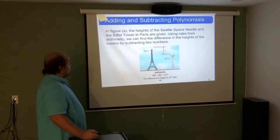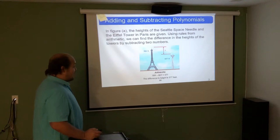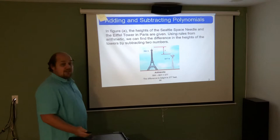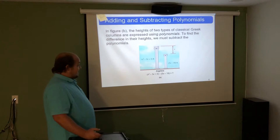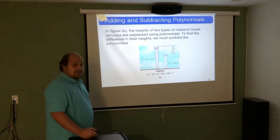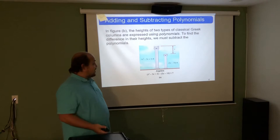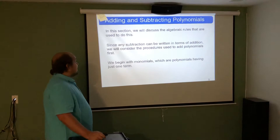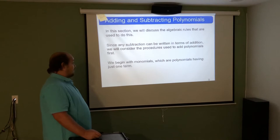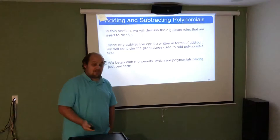In figure A, the heights of the Seattle Space Needle and the Eiffel Tower are given. Using arithmetic, we can find the difference by subtracting: 984 minus 607 tells us the Eiffel Tower is 377 feet higher than the Seattle Space Needle. But if we expressed those heights as algebraic expressions — like x squared minus 3x plus 2 feet and 5x minus 10 feet — it's not as easy to do that subtraction. In this section, we'll discuss the algebraic rules used to do this, starting with monomials and building toward polynomials.